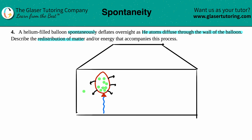We have one atom going out here, another atom going over here, one going out over here. As they're entering, they're going into a much larger area — they're allowed to escape the balloon and go wherever they want. Because of that, the balloon is deflated.